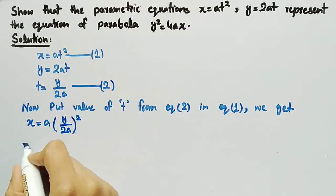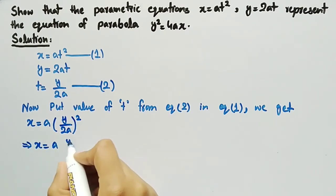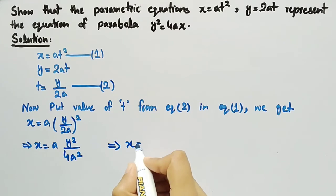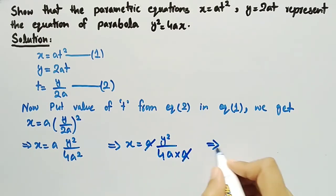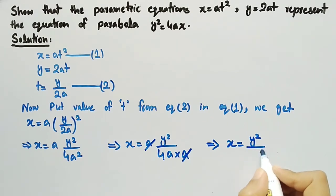We can write it as x equals a into y squared divided by 4a squared, which can be written as a multiplied by a. This a will be cancelled out by this one and we are left with x equals y squared divided by 4a.